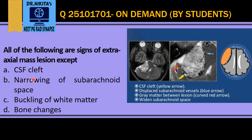So the correct answer is option B — that is narrowing of subarachnoid space — because an extraaxial mass causes widening of the subarachnoid space, not narrowing. So narrowing is not a sign of extraaxial mass.